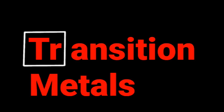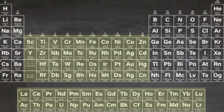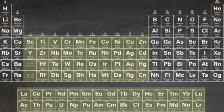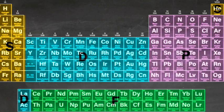Transition metals. The transition elements are metals that have a partially filled D subshell, and they comprise groups 3 through to 12, and the lanthanides and the actinides. Almost all of the D block elements are transition metals, but a few such as zinc do not count as transition metals due to the ions they form.